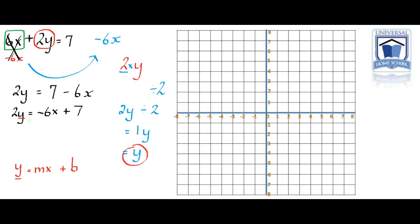So y equals, we've got rid of that 2. But we have to do the same to the other side. That means we're dividing 2 into each of those: negative 6x divided by 2 plus 7 over 2.